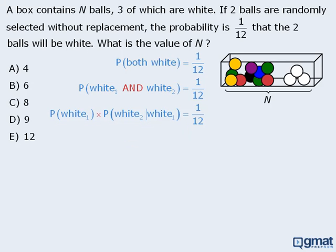At this point we can calculate the two probabilities. First we'll find the probability of selecting a white ball on the first draw. Well since there are N balls all together, and three of them are white, the probability of selecting a white ball will be 3 over N.